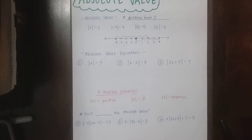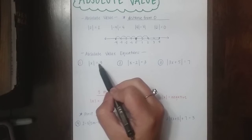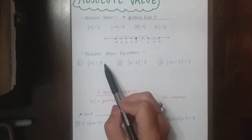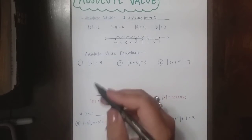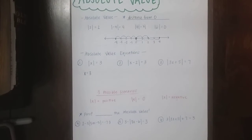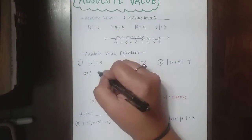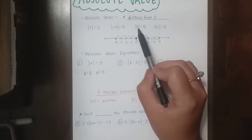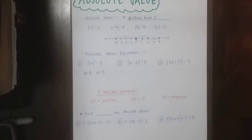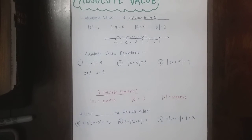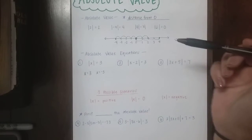When we solve absolute value equations, we use what we know about the distance from 0. So if I have the absolute value of x equals 3, that means I want to figure out the value of x that's 3 units away from 0. The obvious one is 3, but there's another number that's 3 away from 0, and that's negative 3. Just like we said, the absolute value of negative 4 and positive 4 are both positive 4. So for all absolute value equations, I actually have two answers — or potentially two answers.